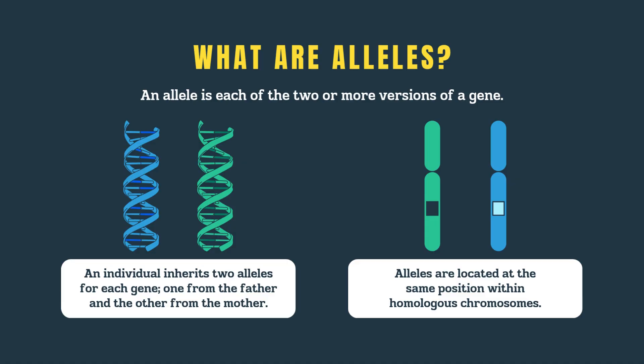In many cases, one allele can be dominant, meaning it masks the effect of the other, called recessive. So, while the gene gives the instructions, the alleles decide which version of the trait you actually show.